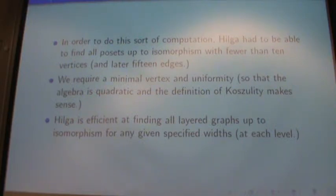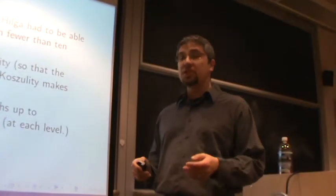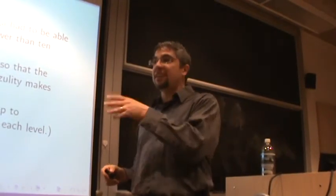In order to do that, Hilga had to be able to compute all layered graphs up to isomorphism. So I wrote all of that into Hilga myself. Basically, I specify the number of vertices I want at each level. And Hilga constructs it bit by bit, sort of recursively, and then checks up to isomorphism. We do require a minimal vertex in uniformity. So this lowered the number of cases. But Hilga is pretty efficient. When I first did this, it took Hilga four hours to do the calculation. Now it takes two and a half seconds for Hilga to do it. So I have sped things up greatly. That's for finding the graphs up to isomorphism on the width that I needed, which was all widths. I actually did less than the Cassidy-Shelton example.